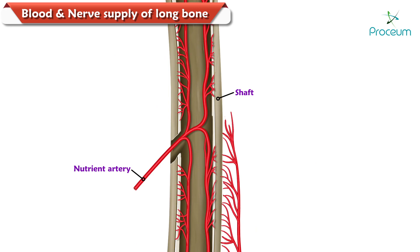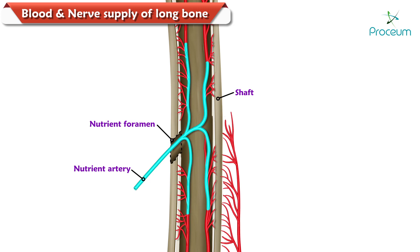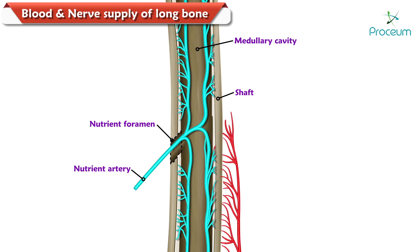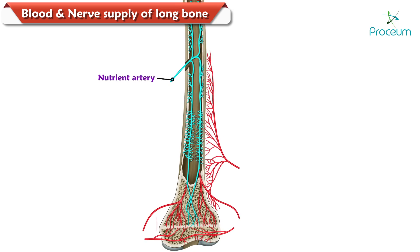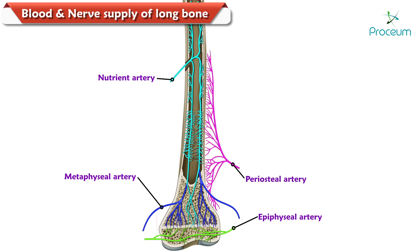The nutrient artery enters the middle of the shaft through a nutrient foramen, runs obliquely, and then divides into ascending and descending branches in the medullary cavity. Each branch then subdivides into a number of smaller parallel vessels which enter the metaphysis and form hairpin loops. These loops anastomose with epiphyseal, metaphyseal (also known as juxta-epiphyseal), and periosteal arteries.